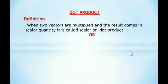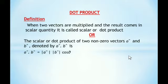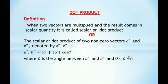What is dot product? When two vectors are multiplied and the result comes in scalar quantity, it is called scalar or dot product. The scalar or dot product of two nonzero vectors a and b, denoted by a·b, is defined as a·b = |a||b|cosθ, where θ is the angle between vector a and b. Remember that θ must be less than or equal to π (180°).